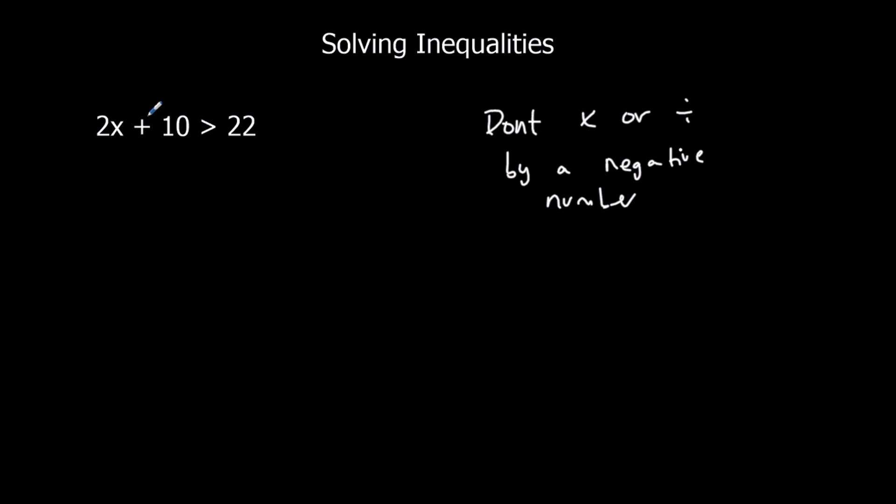Let's have a look at this one. So what we've got to do is find out what x is. We've got to get x by itself. So we're going to get rid of this plus 10 first, and we're going to do that by taking 10 away from both sides.